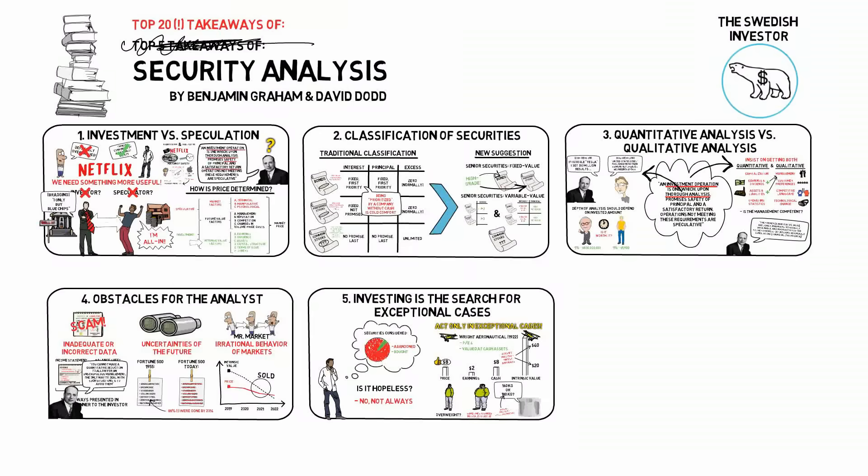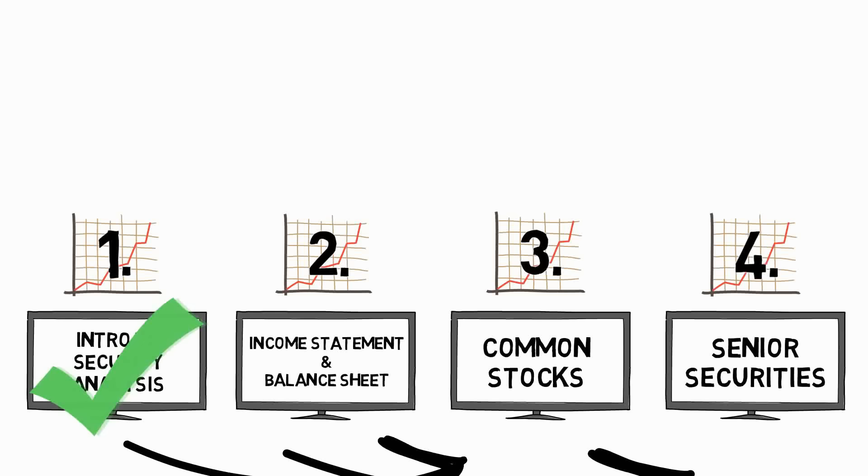Here's a quick summary. An investment operation is one which, upon thorough analysis, promises safety of principle and a satisfactory return. There are many different types of securities suitable for investment operations. They are, however, not bought under the same premises. Quantitative data must always be validated by qualitative observations. The incorrectness of data, uncertainties of the future, and irrationalities of markets complicate the work of the analyst, but they do not nullify it. One of the greatest advantages of the analyst is that he can, and should, only act in exceptional cases. In the next video, I will present the most important aspects of analyzing an income statement and a balance sheet. After that, I will present the ins and outs of common stock investment, and lastly, that of senior securities. Cheers!